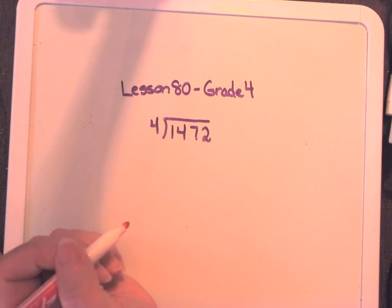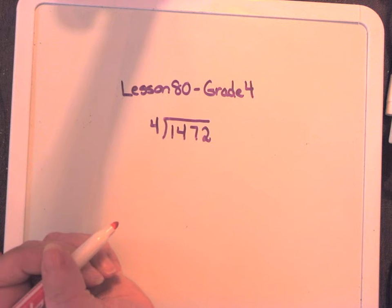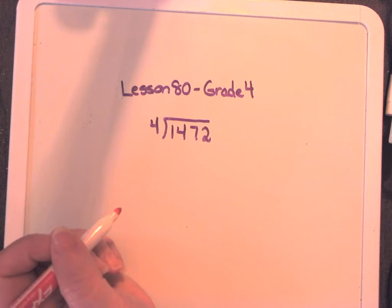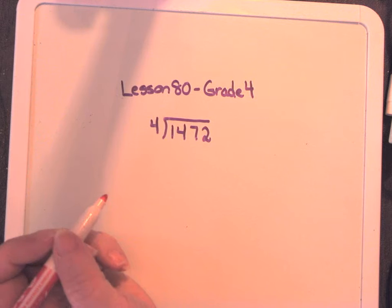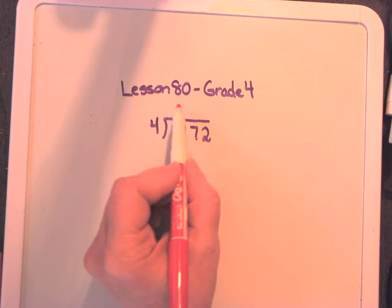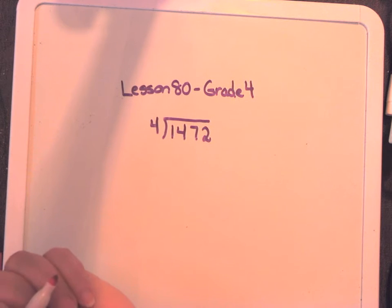Hello, fourth graders. We are looking today at lesson 80. And in lesson 80, we're talking about division with zeros in the quotient. Now remember, a quotient is the answer to a division problem.